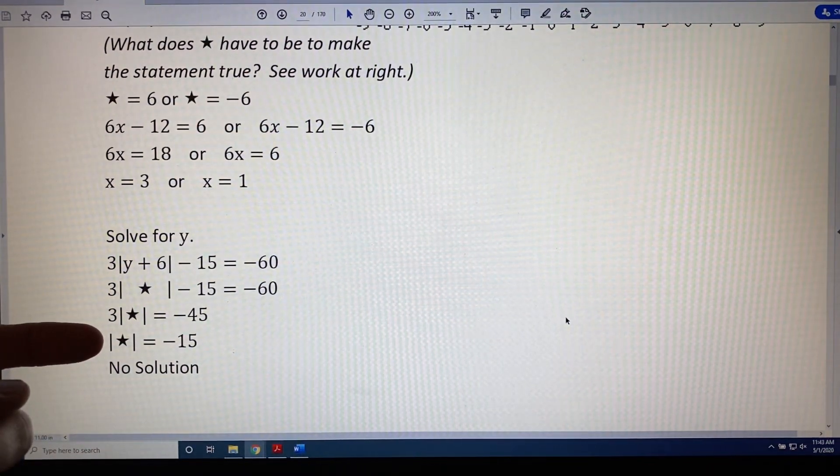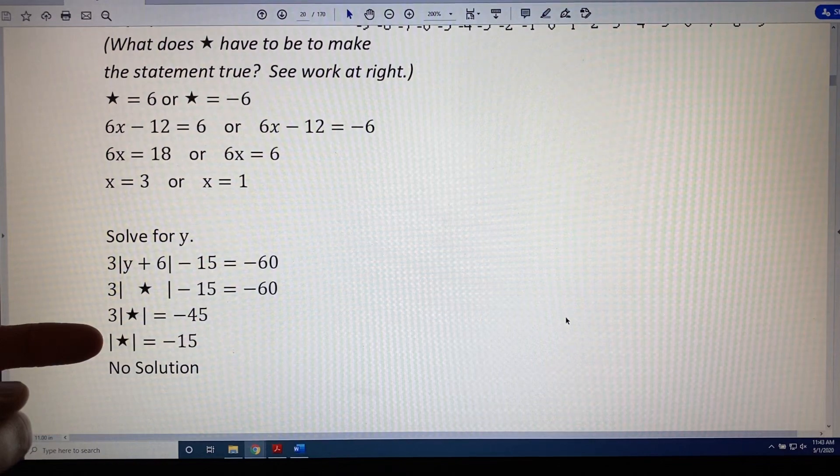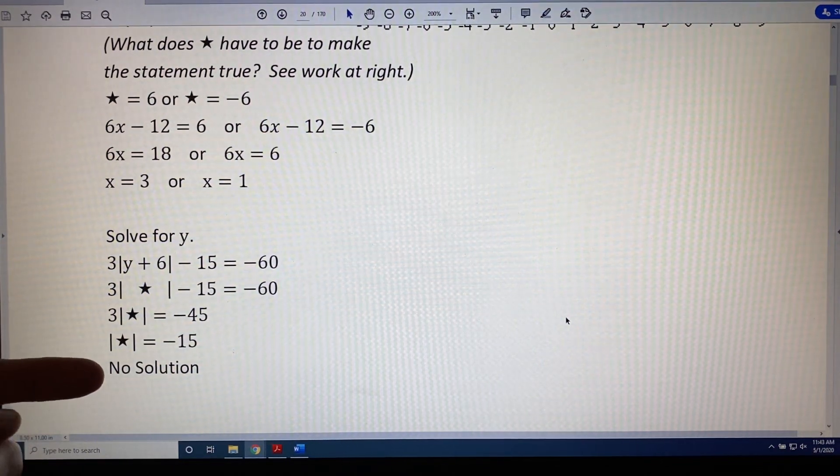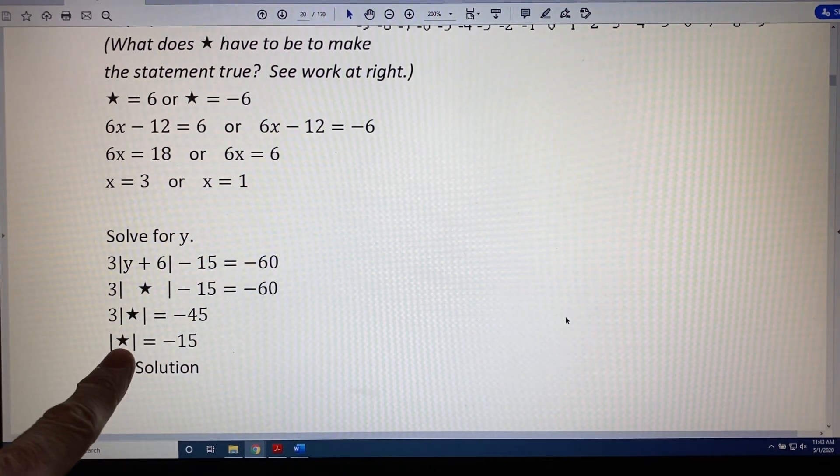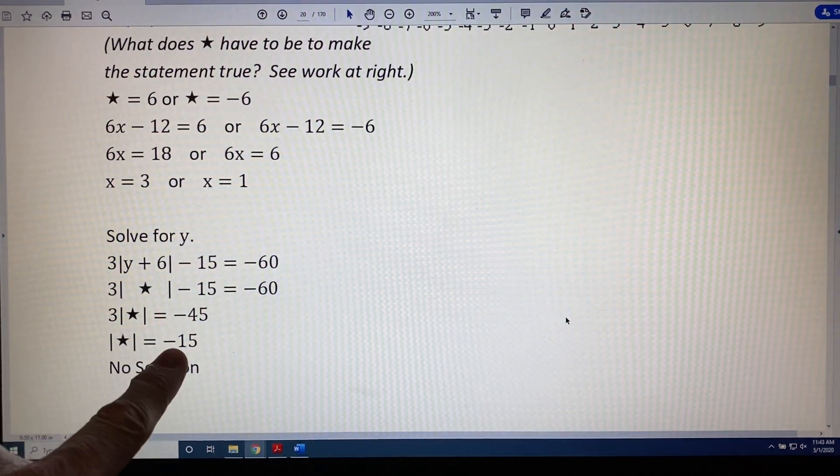So now we have to solve the equation: the absolute value of star equals negative 15. This has no solution. It is not possible to take the absolute value of a number and get a negative result.